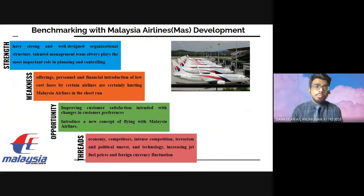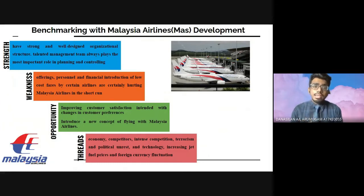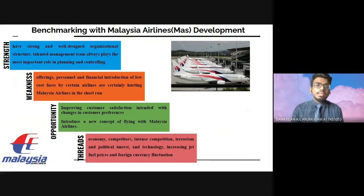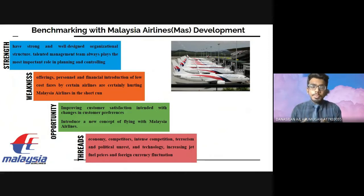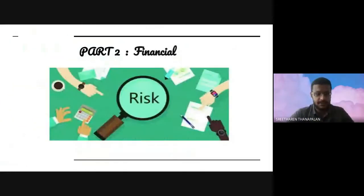When we benchmark this case with Malaysian Airlines (MAS), the strength of MAS is their very strong and well-designed organizational structure and talented management team, which plays the most important role in planning and controlling. Their weakness is that the introduction of low-cost fares by certain airlines like AirAsia is hurting national airlines in the short run. The opportunity is improving customer satisfaction with changes in customer preference. Threats include economic competition, intense competition, terrorism, and political unrest, which put airlines at risk.